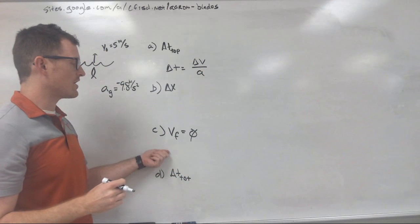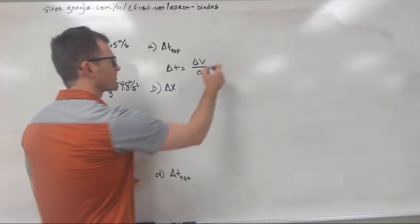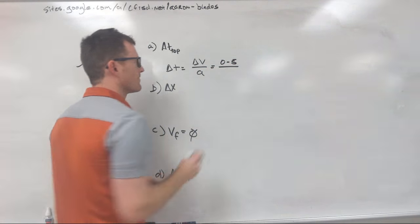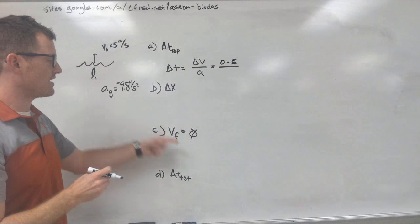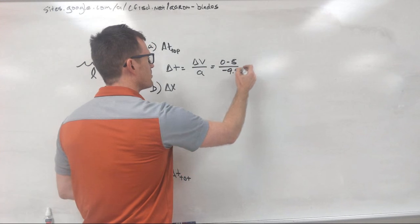Because we know our final velocity and we were given our original velocity, we can now solve for delta V. That's going to be zero minus five, because we have an initial velocity of five and a final velocity of zero, and our acceleration of negative 9.8.